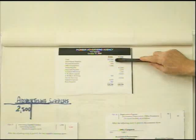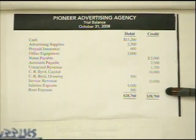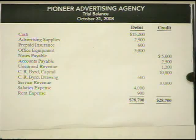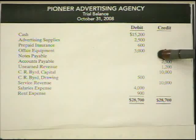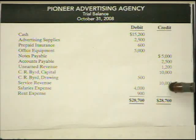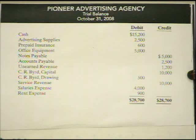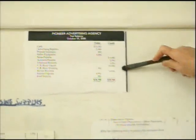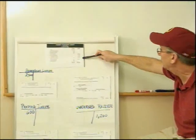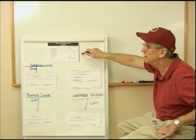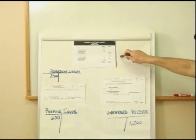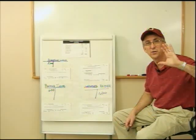Coming back to our trial balance — the purpose of adjusting entries is to go through a number of balances at the end of every month and refine them to exactly what they should be. Every company needs to have their trial balance adjusted at the end of the period. The purpose is to put revenues and expenses in the period they actually belong, making sure they are not in the incorrect period. That's all for today, and I'll see you next time.